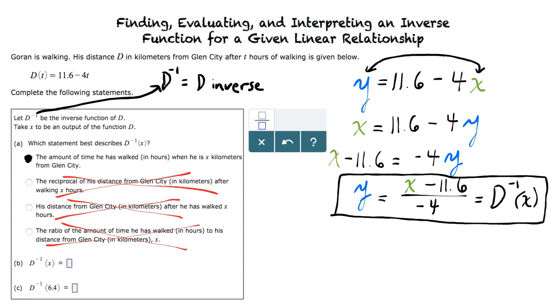This leaves us with part c. We need to solve the inverse for x equals 6.4. This means we have 6.4 minus 11.6 divided by negative 4. After simplifying the numerator and dividing everything, we find that d inverse of 6.4 equals 1.3, which is our answer for part c.